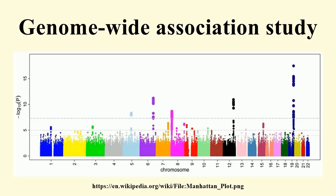One of the strongest eQTL effects observed for a GWAS-identified risk SNP is the SORT1 locus. Functional follow-up studies of this locus using small interfering RNA and gene knockout mice have shed light on the metabolism of low-density lipoproteins, which have important clinical implications for cardiovascular disease.